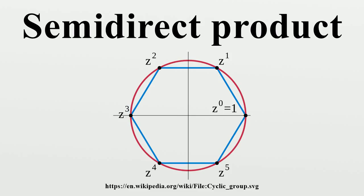Given any two groups N and H and a group homomorphism φ: H to Aut(N), we can construct a new group, called the semi-direct product of N and H with respect to φ, defined as follows.